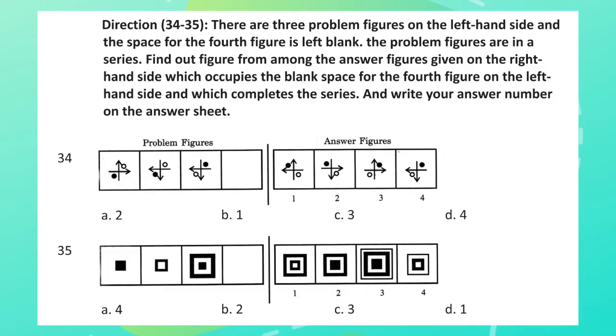Directions for questions 34 and 35: There are three problem figures on the left-hand side and the space for the fourth figure is left blank. The problem figures are in a series. Find out figure from among the answer figures given on the right-hand side which occupies the blank space for the fourth figure on the left-hand side, which completes the series, and write your answer number on the answer sheet.